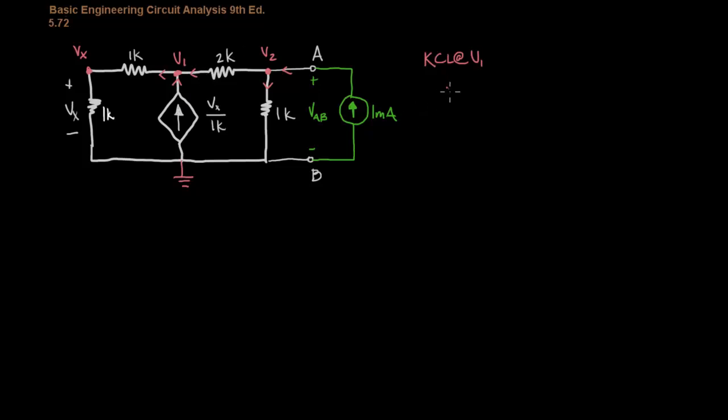This is going to be V2 minus V1 over 2K, and this is going in. This is plus, and that's VX over 1K, and then finally going out is V1 at a higher potential than VX. So, V1 minus VX over 1K. All of that is equal to zero, and when you simplify that, you're going to get 4VX minus 3V1 plus V2 equals zero.